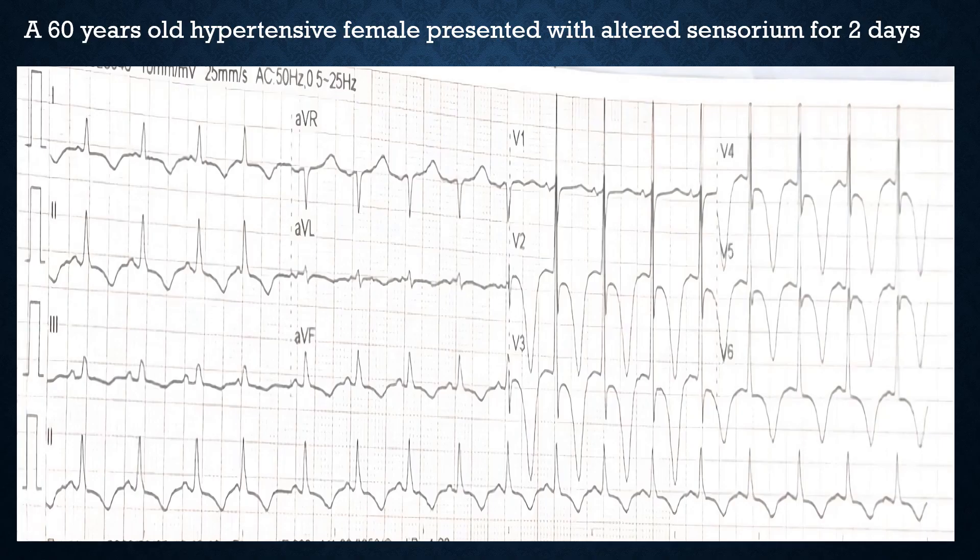We will be discussing a case of a 60-year-old hypertensive female who presented with altered state of consciousness for the past few days. This was the ECG done at that time.